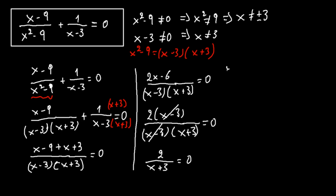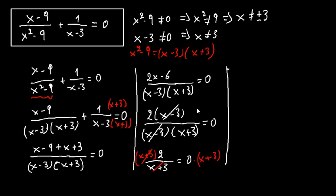Here we can see that in this form we have no solutions. If we multiply both sides by x plus 3, the denominator is gone and we get 2 equals 0, which we know is not true. So here we have no solutions.